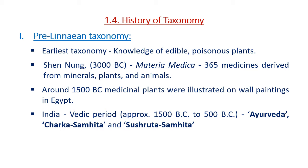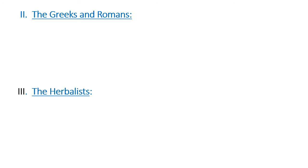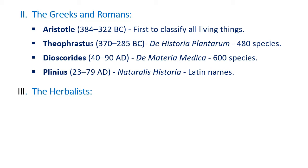In India during the Vedic period, classical works like Ayurveda, Charaka Samhita, Shushruta Samhita, and Rukshayurveda are important works. In the Greek and Roman period, Aristotle was first to classify all living things. Theophrastus described 480 species of plants in De Historia Plantarum. Dioscorides described 600 species in De Materia Medica. Pliny used Latin names in his book Naturalis Historia.